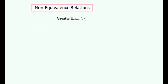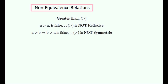Now to study the first relation that is not an equivalence relation, and that is the greater than relation. Any number is never greater than itself, so it is not reflexive. So now we know that it isn't an equivalence relation, but we want to find out what sort of non-equivalence relation it is. And it is obviously not symmetric either — in fact it is never symmetric for any two numbers, but it is transitive.